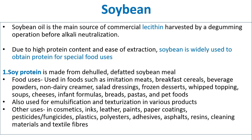Soybean oil is the main source of commercial lecithin. Lecithin is harvested by a degumming operation before alkali neutralization. Due to high protein content and ease of extraction, soybean is widely used to obtain protein for special food uses. Soy protein is made from dehydrated, defatted soybean meal and is used in foods such as imitation meats, breakfast cereals, beverage powders, non-dairy creamer, salad dressings, frozen desserts, whipped toppings, soups, infant formulas, pastas and pet foods. It is also used for emulsification and texturization in various products.